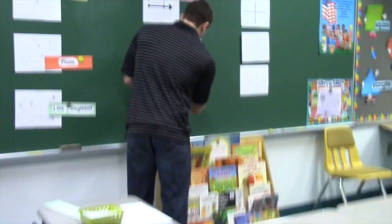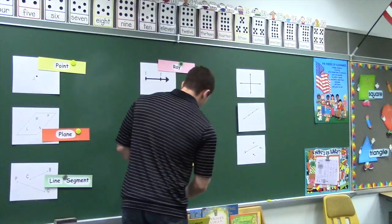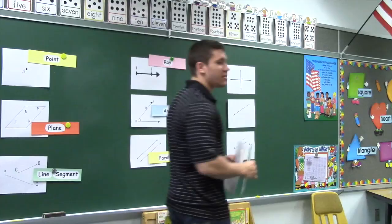If we have two lines that do intersect, and at their intersection they form a 90 degree angle, what do we call this? Perpendicular lines. Two lines are perpendicular if the angle where they intersect forms 90 degrees.